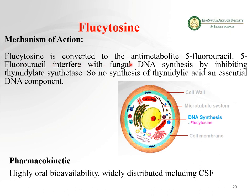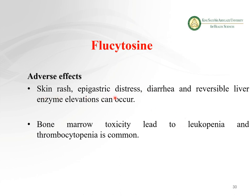The mechanism of flucytosine: it is converted to antimetabolites — 5-fluorouracil (5-FU) — which interferes with fungal DNA synthesis by inhibiting thymidylate synthase, inhibiting synthesis of thymidylic acid, which is an essential component of DNA. Pharmacokinetics: it is highly orally bioavailable and widely distributed into the cerebrospinal fluid. Adverse effects include skin rashes, gastric distress, diarrhea, and reversible liver enzyme elevation. Bone marrow toxicity can lead to leukopenia and thrombocytopenia.